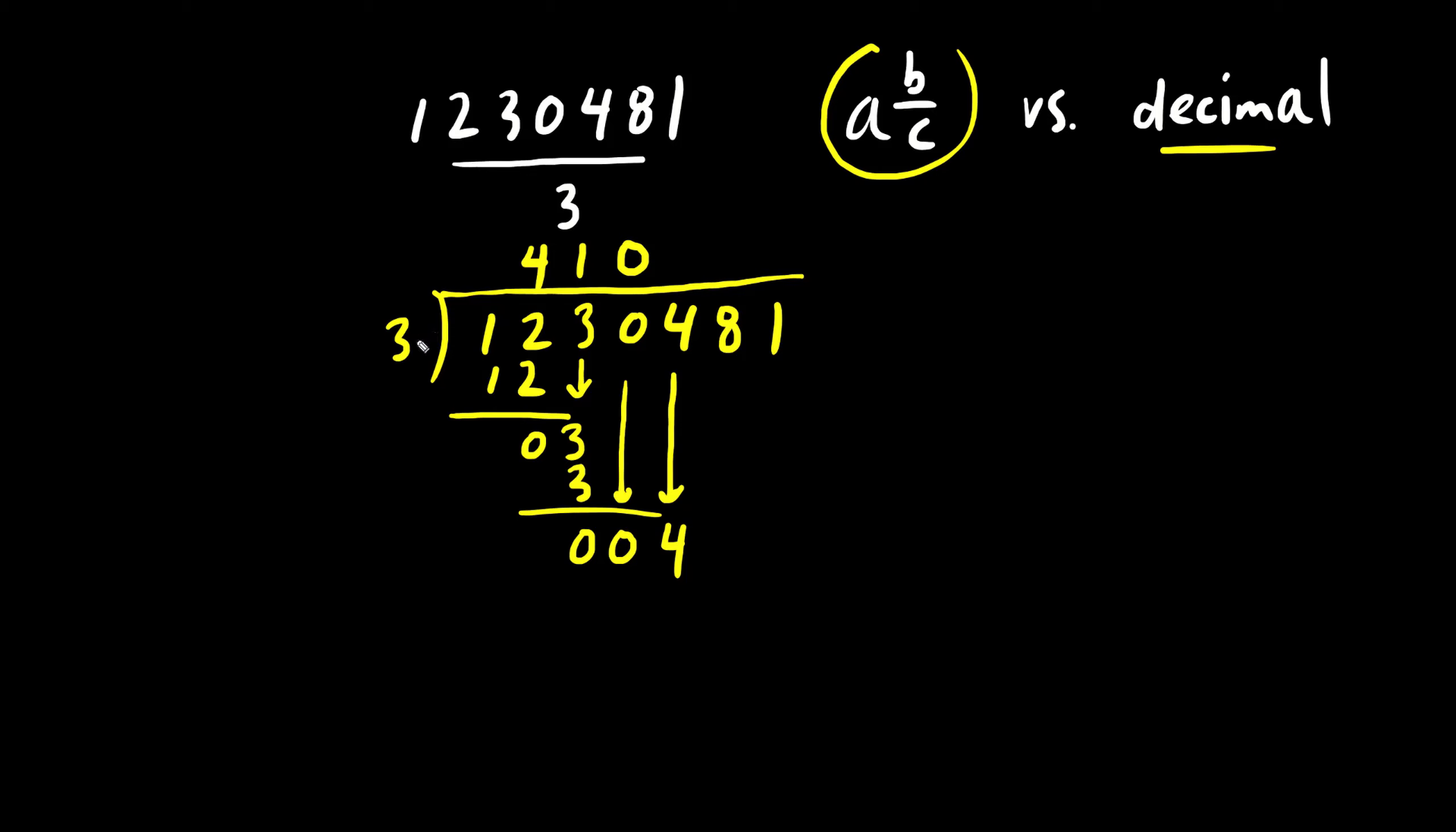And there's a gap here. Three times what is four? Let's try one. Three times one is three. Subtract. Four minus three is one. And we drop the next digit, eight. Three times what is 18? Let's try six. Three times six is 18. We subtract and we drop the next digit, one. Three times what is one? It doesn't fit. So let's put zero here.